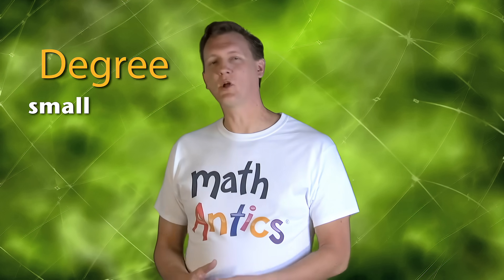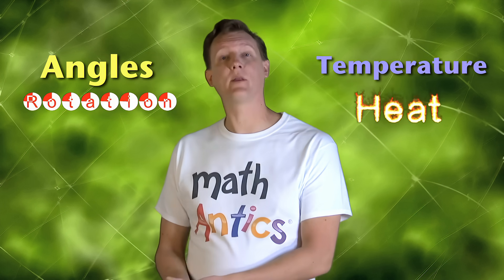Now hold on a second. I thought degrees were used to measure how hot or cold something is. You know, like… It's 100 degrees outside today! Ah, now that is a good point, you smart-looking fella. The word degree is used for a lot of different things, so it can be a little confusing sometimes. It makes more sense if you just think of a degree as a small amount of something. For temperature, a degree is a small amount of heat. But for angles, a degree is a small amount of rotation.